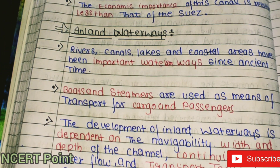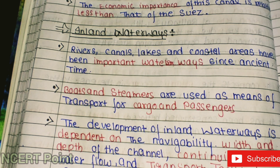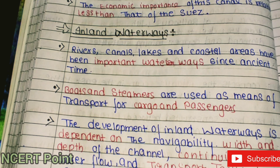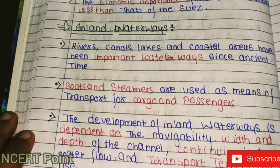Inland waterways — rivers, canals, lakes, and coastal areas — have been important waterways because large quantities of heavy goods can be transported through them. Boats and steamers are used as means of transport for cargo and passengers. The development of inland waterways depends on the navigability, width, and depth of the channel, continuity of water flow, and transport technology in use.